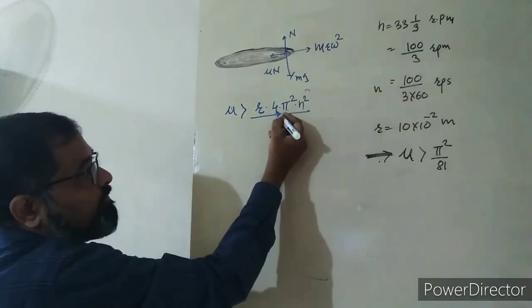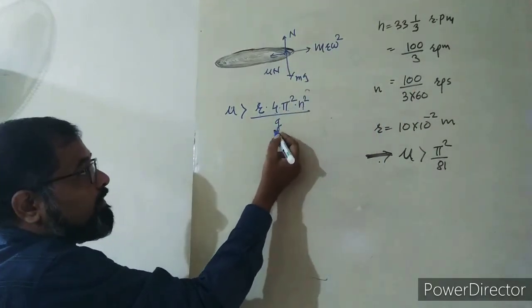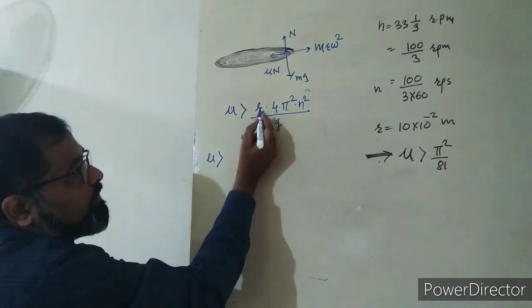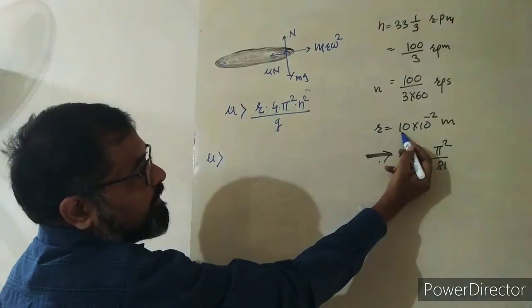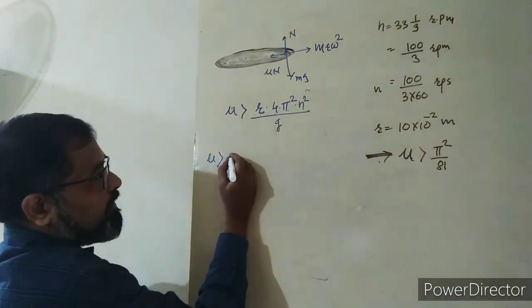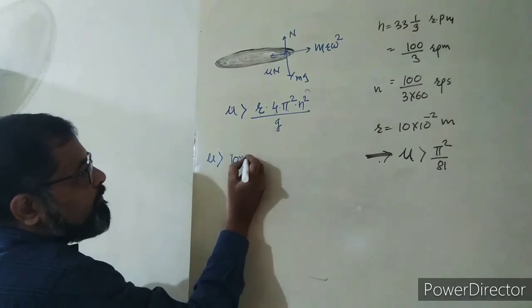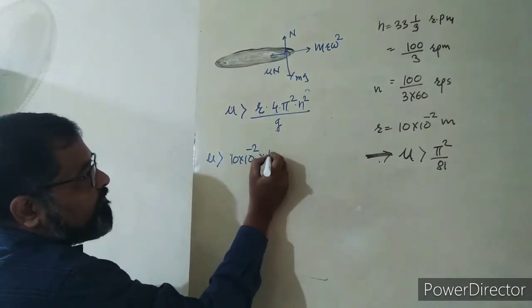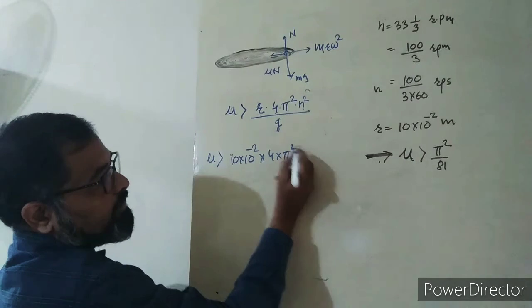Putting the values: r is given as 10 centimeters, which we convert to meters. So radius times 4π² (we'll keep it as is since we need to show that result).